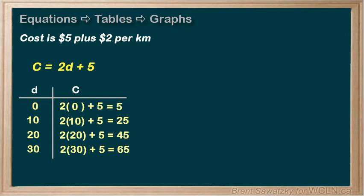Each row represents a set of data. When d equals 0, c equals 5. That's one set of data, or ordered pair. When d equals 10, c equals 25. That's another set of data, or ordered pair. And 2 more sets of data, for a total of 4 ordered pairs.